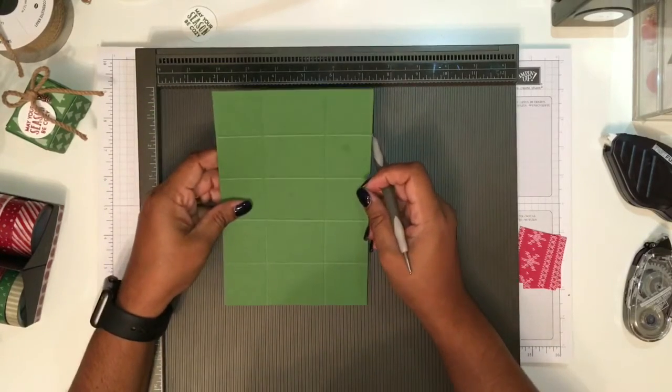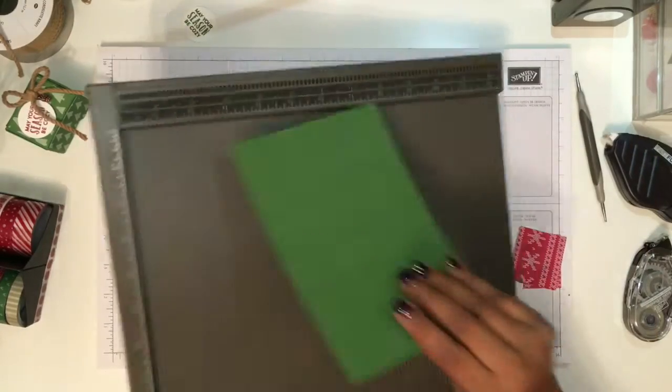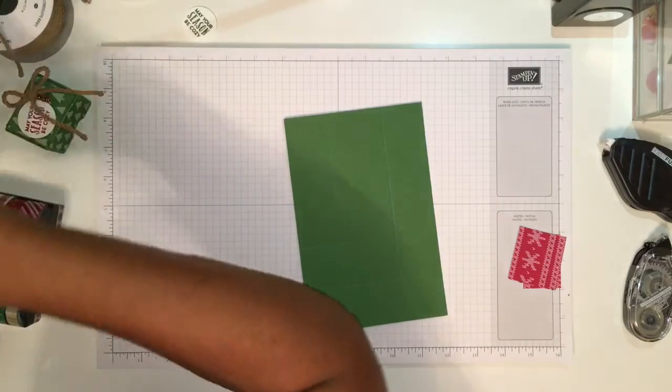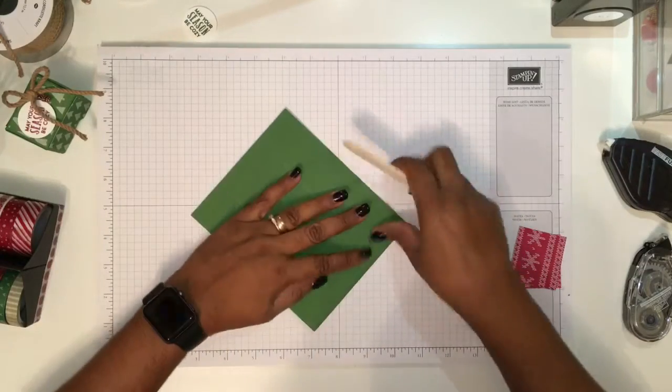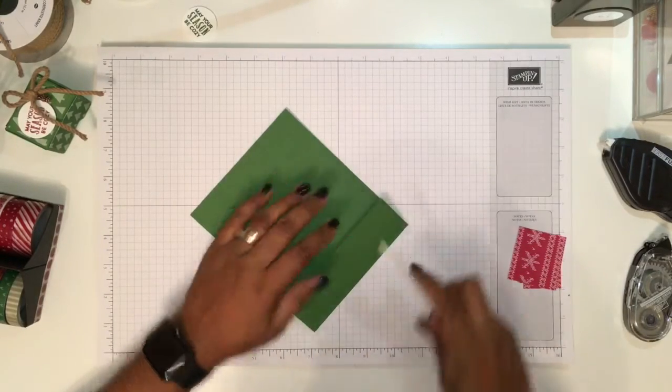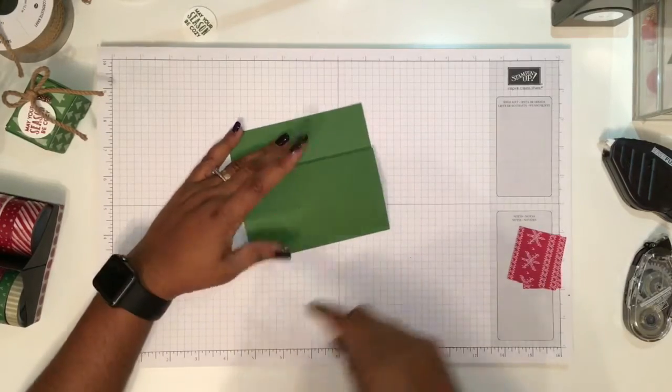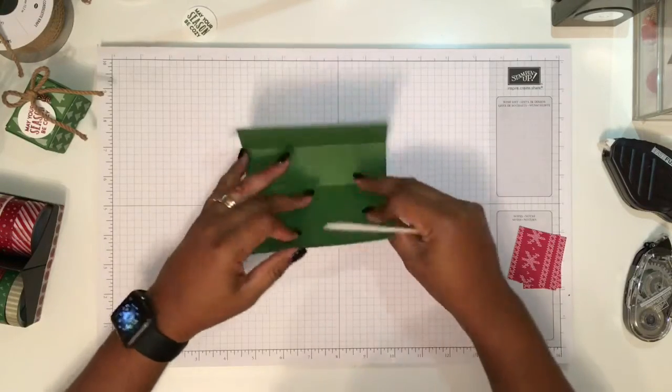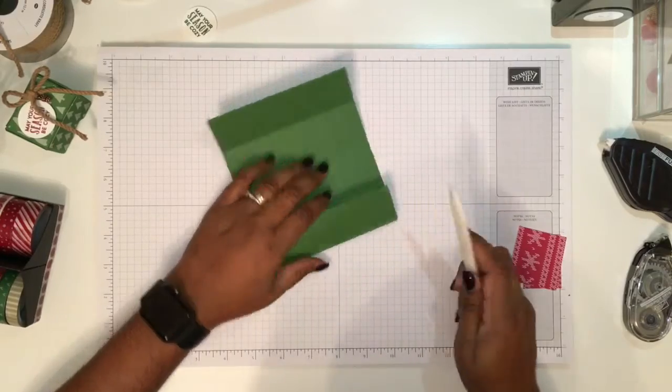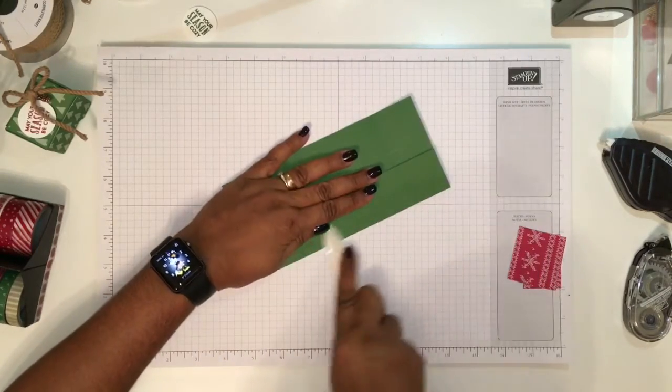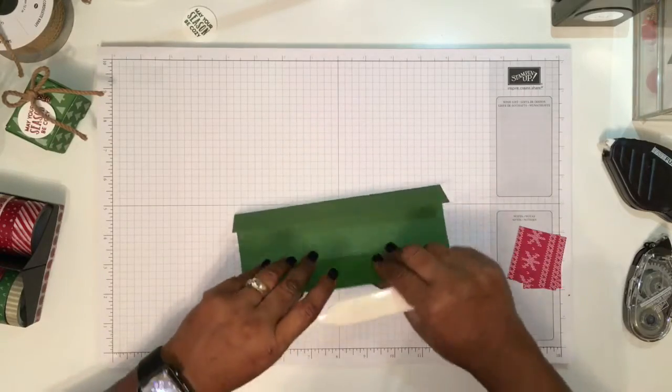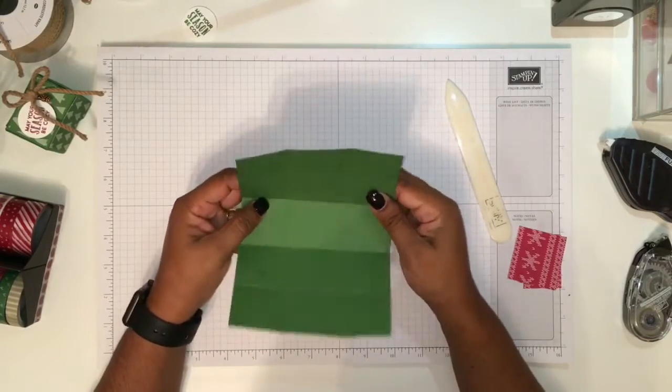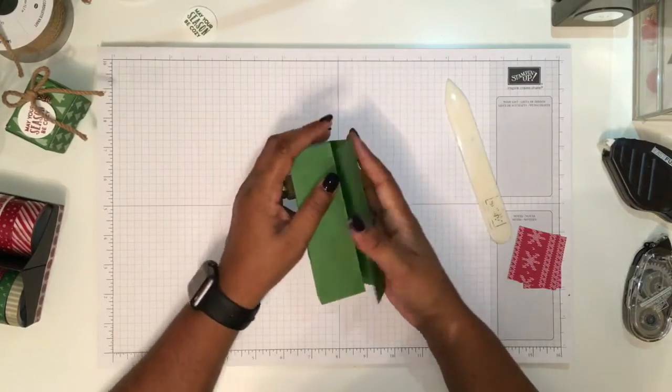All the scoring is done and we're going to fold and burnish all the lines. This is a one-piece-of-paper box. This cardstock is very strong, so it just needs a little bit more strength as you're pushing. Now this is all done and our box is going to close like this.